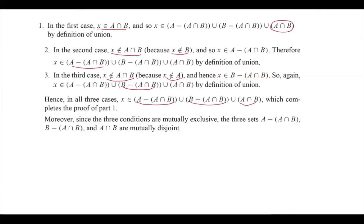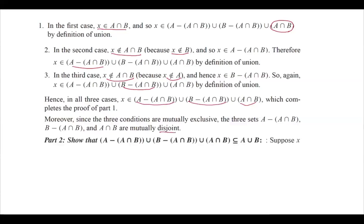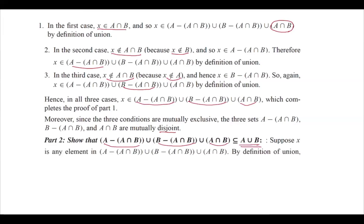Since the three conditions are mutually exclusive, these three sets are mutually disjoint. Now let us show that the union (A minus A∩B) ∪ (B minus A∩B) ∪ (A∩B) is also a subset of A∪B. Suppose x belongs to the set on the left-hand side — that is, x belongs to (A minus A∩B) ∪ (B minus A∩B) ∪ (A∩B). We need to show that x lands in the union A∪B.